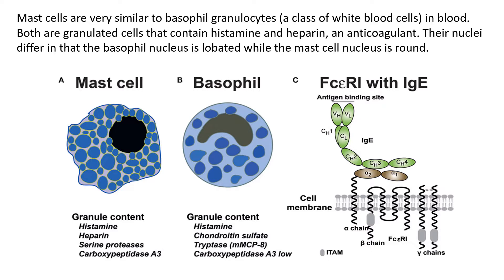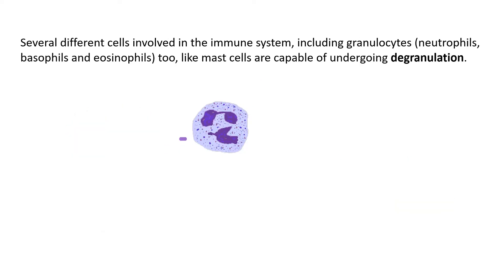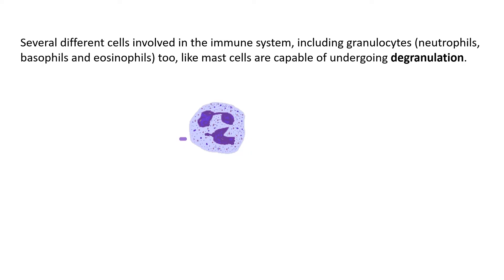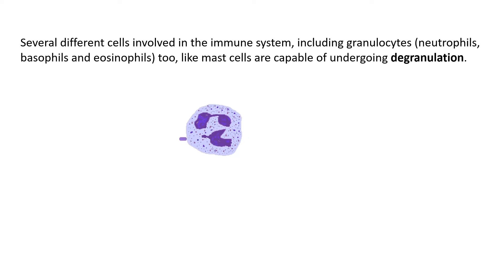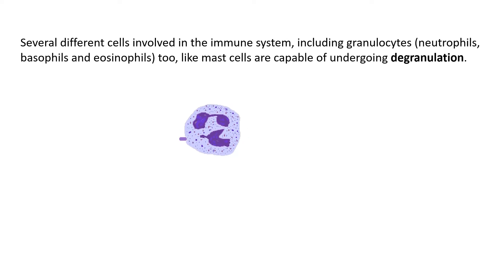Their nuclei differ in that the basophil nucleus is lobated while the mast cell nucleus is round. Several different cells involved in the immune system, including granulocytes like neutrophils, basophils, and eosinophils, are also capable of undergoing degranulation just like mast cells.